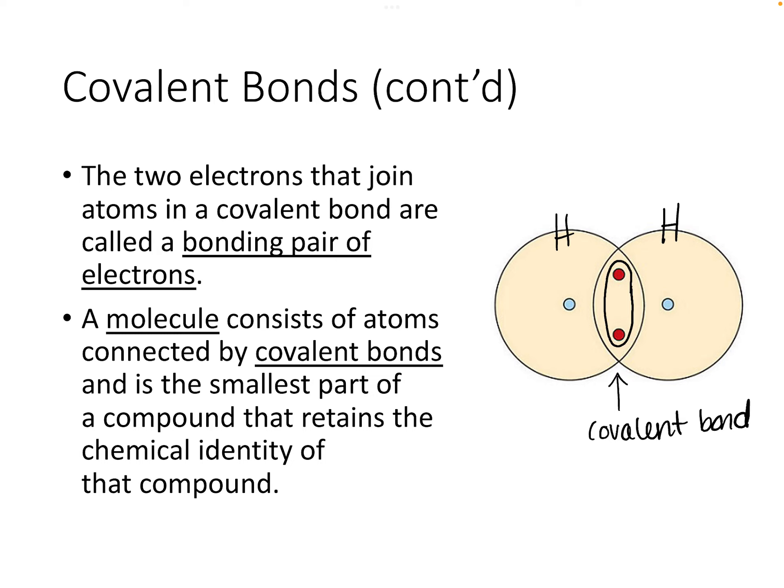A molecule consists of atoms connected by covalent bonds and is the smallest part of a compound that retains the chemical identity of that compound. Previously, we also talked about diatomic molecules, and we used an acronym to remember them: HOFBRINKEL. This stands for hydrogen, oxygen, fluorine, bromine, iodine, nitrogen, and chlorine. Each of these elements on the periodic table prefer to be in a pair with itself.